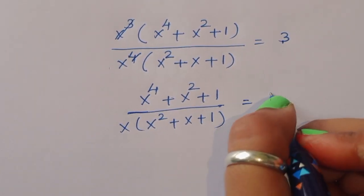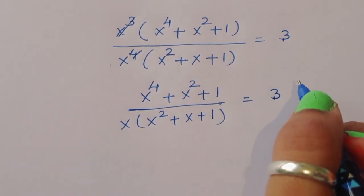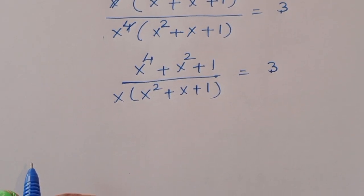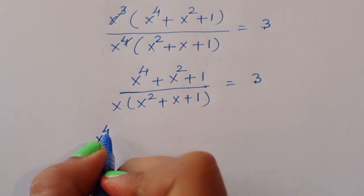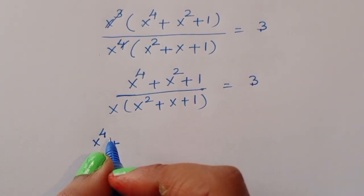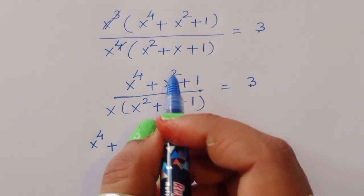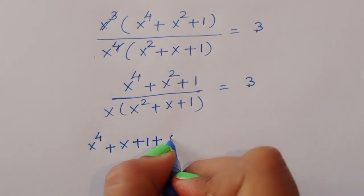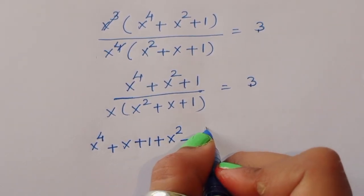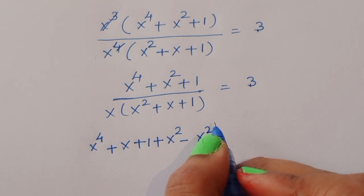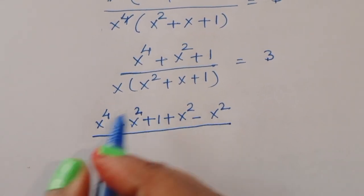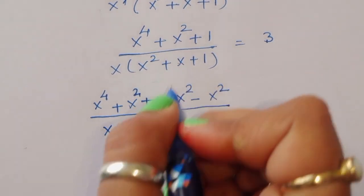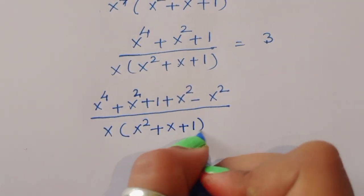Now in the numerator we manipulate x⁴ + x² + 1 by adding and subtracting x, rewriting it as x⁴ + x + 1 + x² - x², all divided by x times (x² + x + 1) equals 3.